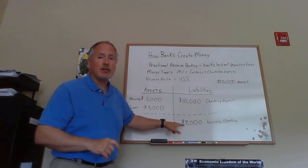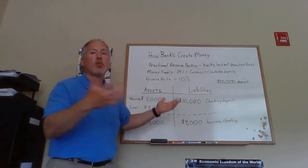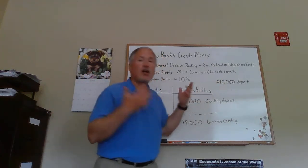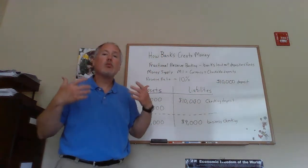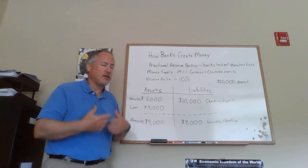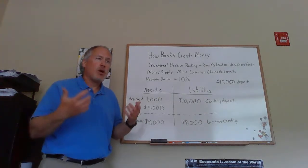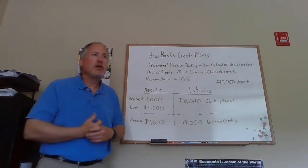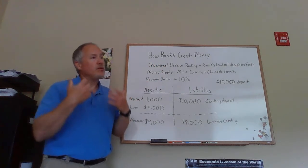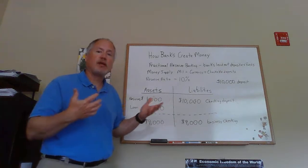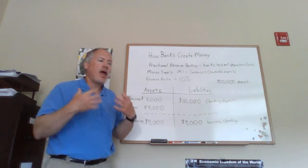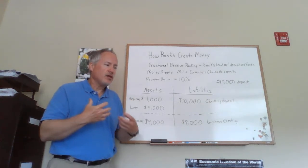Ten thousand dollars came into a bank — that ten thousand was already out there in the system — and we ended up with nineteen thousand dollars. If you go on and have another loan round, it becomes even more than that. But this first step shows us money was created, not through a bank running a printing press or counterfeiting, but through normal, legal, ethical fractional reserve banking operations.